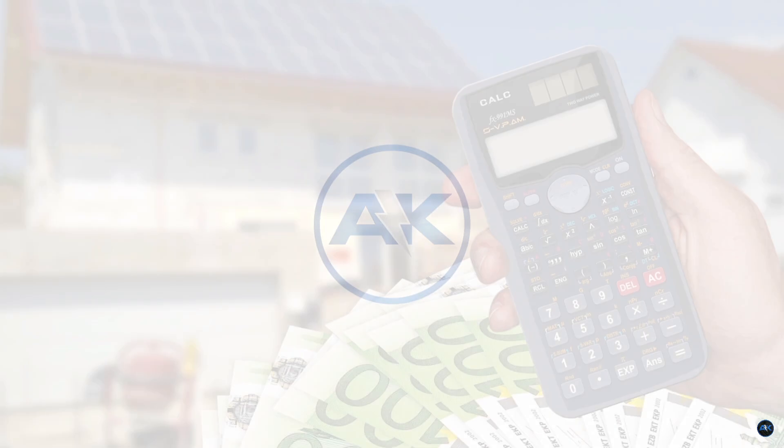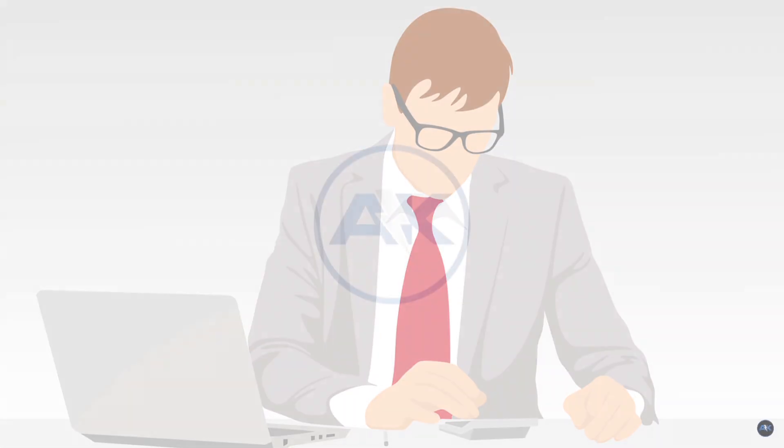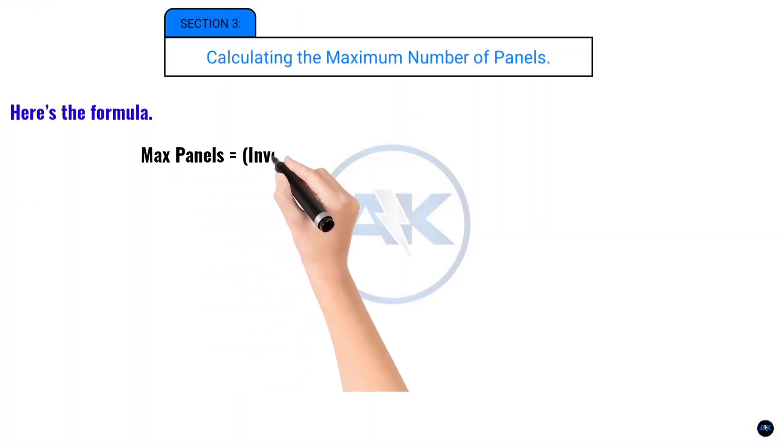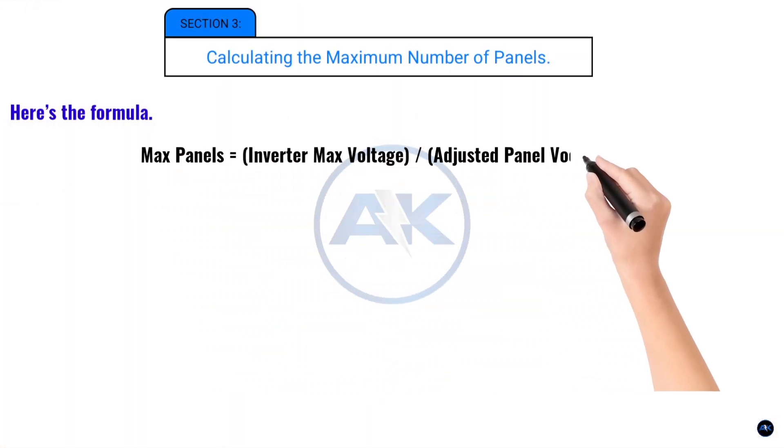Section 3. Calculating the Maximum Number of Panels. Let's do a quick calculation to figure out how many panels you can safely connect. Here's the formula. Max panels equals inverter max voltage divided by adjusted panel VOC.